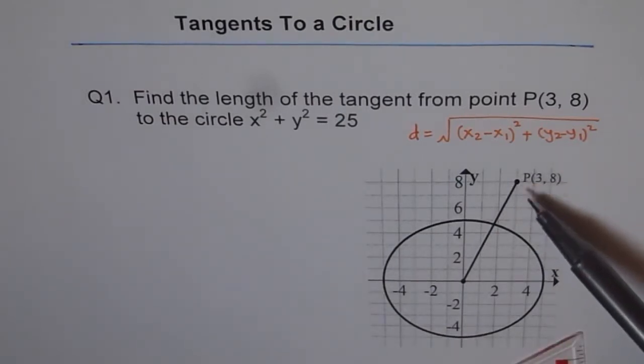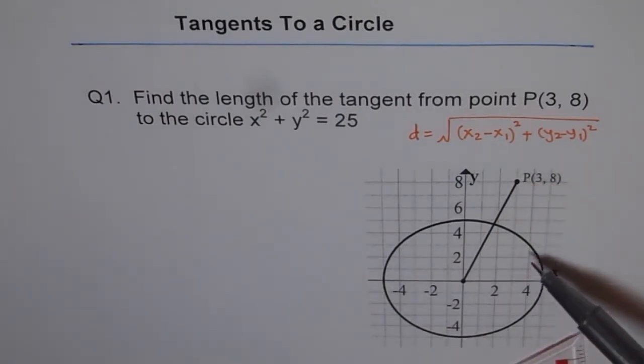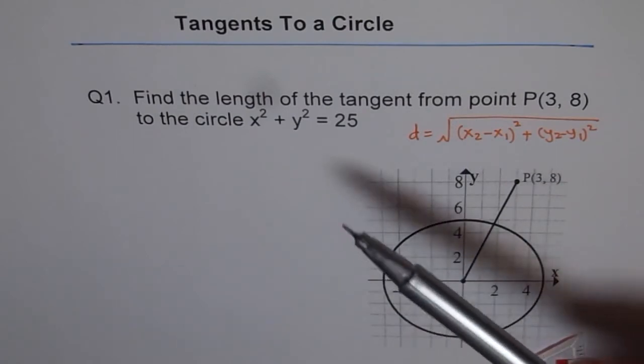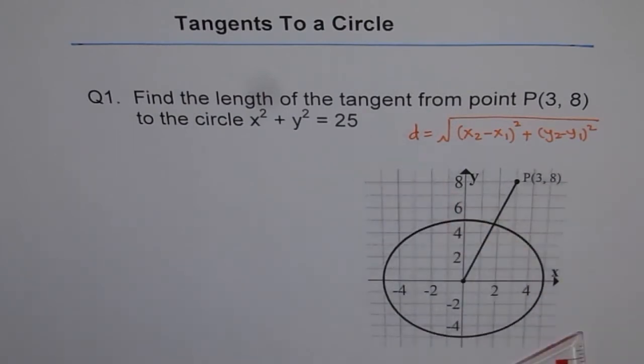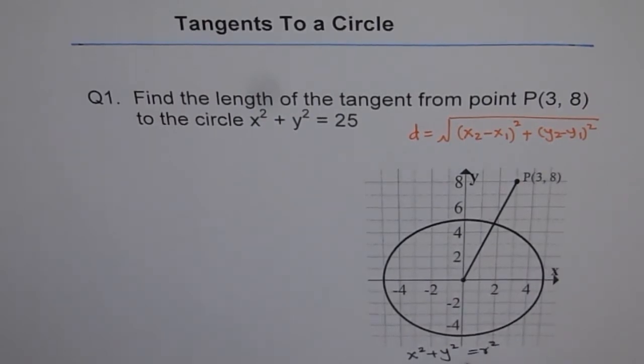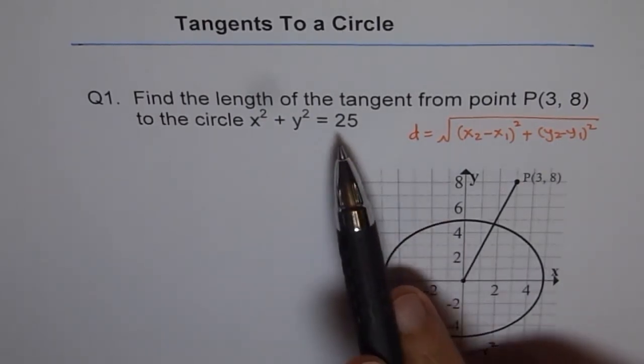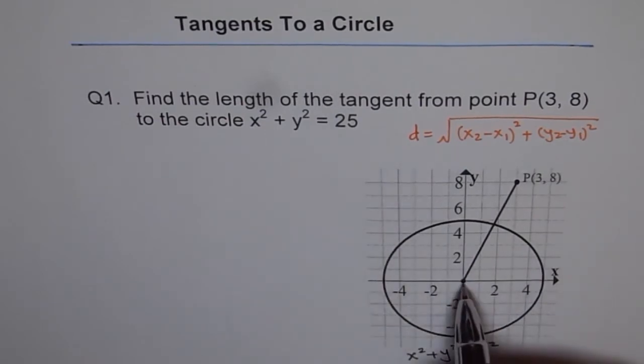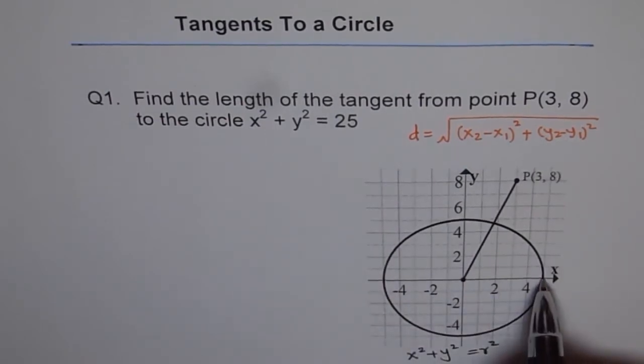So we are given a point here P, which is (3, 8), and that's the circle x square plus y square equals to 25. Now you know, equation of a circle is x square plus y square equals to r square. So here, r is 5, square root of 25. So this circle has radius of 5.